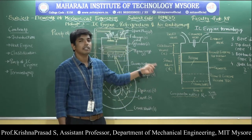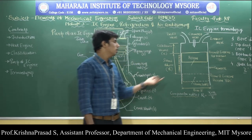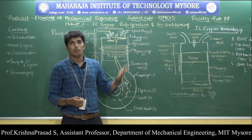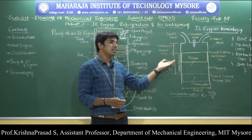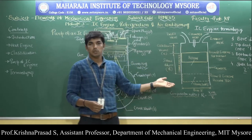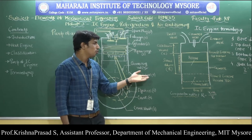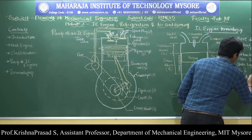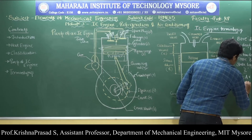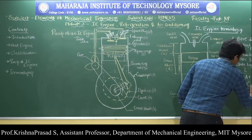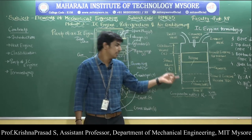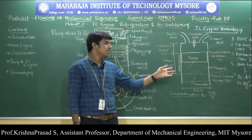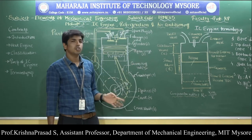The fifth term is stroke volume (Vs). Stroke volume is the volume covered by the piston when it moves from TDC to BDC. It is denoted by Vs. Vs equals area of the cylinder multiplied by length: Vs = (π d² / 4) × L, where D is the bore diameter of the engine cylinder and L is the stroke length.